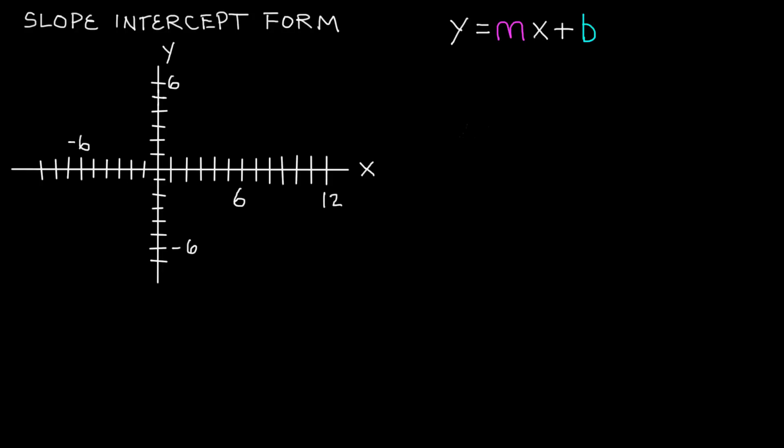Hey everybody, this is Paul. Welcome to Lesson 65 in the Intermediate Algebra Series. In this tutorial I'm going to cover the slope-intercept form of a line.